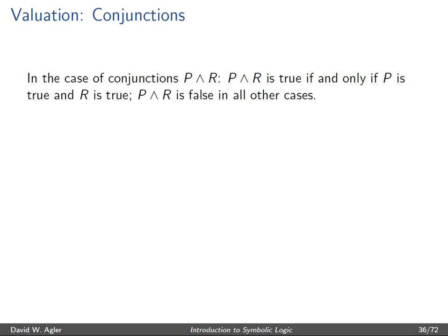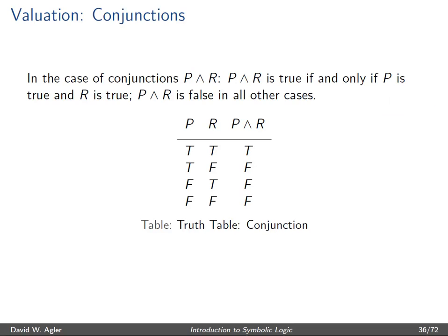For the valuation function for conjunctions, a conjunction P and R is true if and only if both P and R are interpreted as true, and false in all other cases. We can cover the four different ways P and R can be interpreted using the truth table. In the first row where P and R are both true, the conjunction P and R is also true. In all other rows — where at least one conjunct is false — the conjunction P and R is evaluated as false.